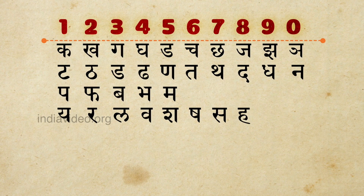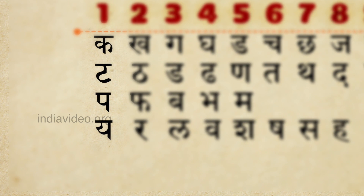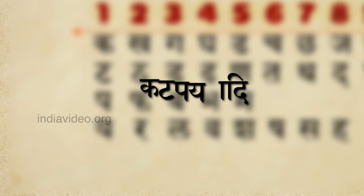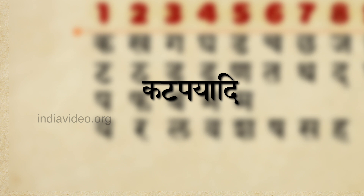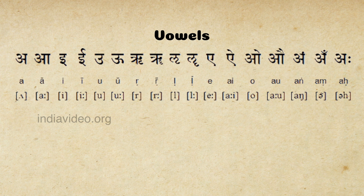The number 1 is mapped to the alphabets Ka, Ta, Pa, and Ya, which when pronounced together gives 'Kattapayadi', where 'Adi' in Sanskrit means 'etc.' The vowels or Swaraksharas are not assigned any numerical value.